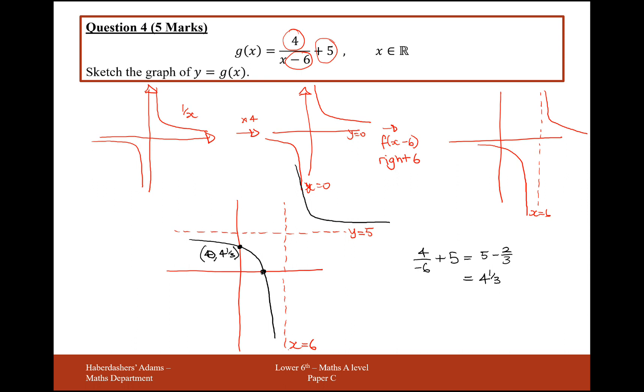The next coordinate here gives me a y equals 0, so in this I plugged in x equals 0. Here it's going to have a y coordinate of 0, so 0 equals 4 over x minus 6 plus 5.